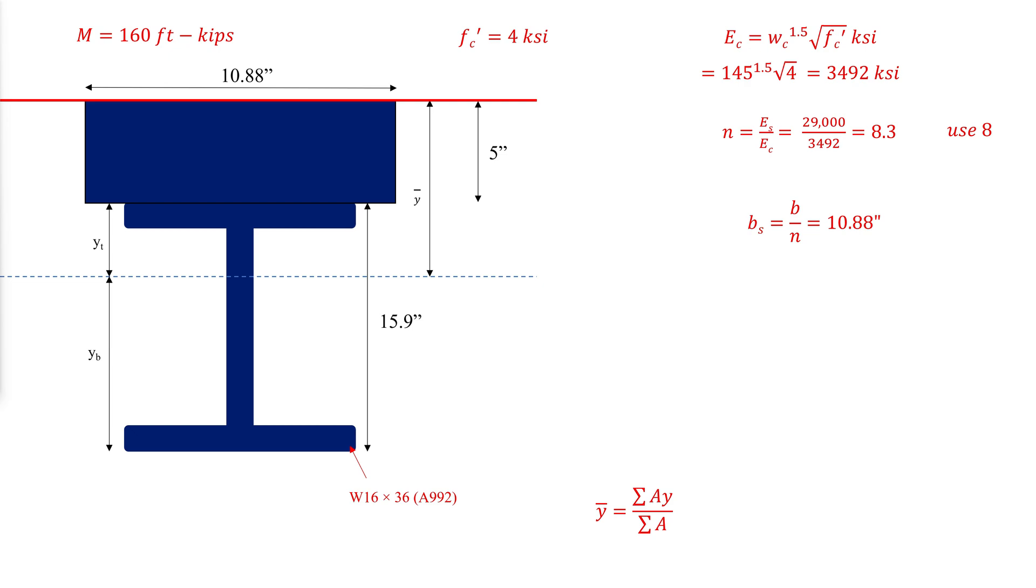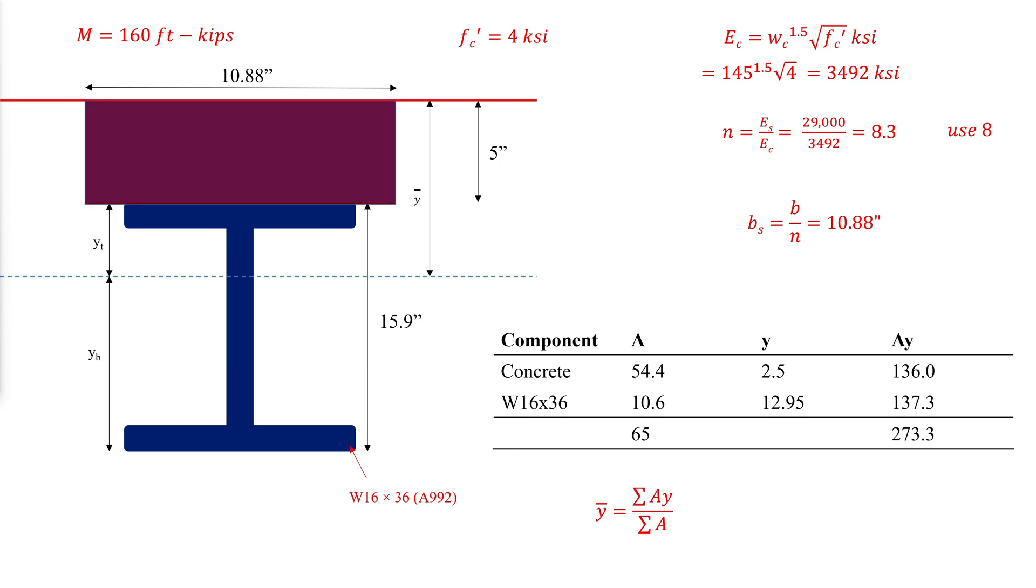The W section has an area of 10.6 square inches, and its center is 12.95 inches away from the reference axis. This means that the distance of the neutral axis from the top of the concrete is 4.205 inches, which is above the top of the steel.